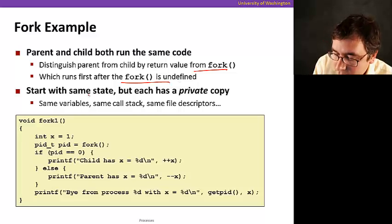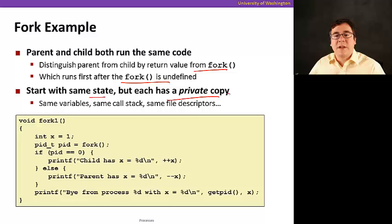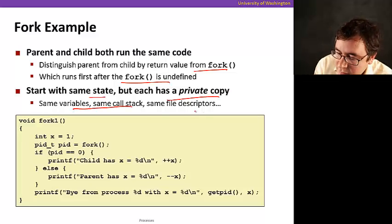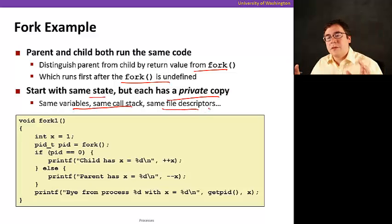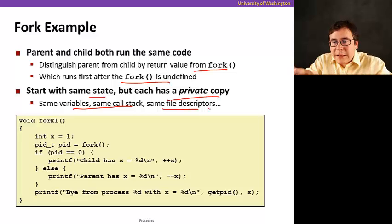So one thing to note here is that they both start the same state, but after the fork, they both have a private copy of the state. Same variables, same call stacks, same file descriptors, and so on. But then after that point, they can diverge the execution, right? Because that's what's going to make this interesting.